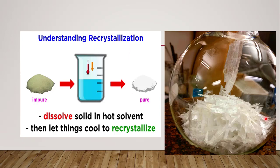As far as recrystallization is concerned, we can obtain different kinds of crystals, including colored crystals. In recrystallization, the impure substance is converted to a pure substance by dissolving the solid in a hot solvent and letting it cool to recrystallize. So this is one method of purification, but removing the impurities from the substance is purification overall.